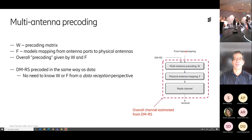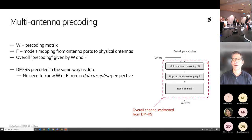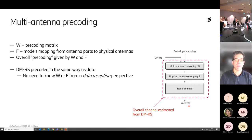The idea here is that we feed in the different transmission layers and also the demodulation reference signals, which pass through the same set of processing steps as the data. At the receiver side, I only need to look at the reference signals and estimate the overall channel — both the radio channel, the physical antenna setup, and the transmission pre-coding. From a data reception perspective, I don't care if it comes from the radio channel, the physical antenna setup, or the pre-coding matrix W. I estimate that from the reference signals.